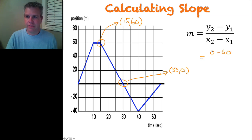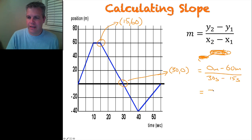So now we have our y is 0 minus 60. Oh sorry, I should rewrite that again. I need to put in my units. So 0 meters minus 60 meters over 30 seconds minus 15 seconds. Okay, and that gives me a total of negative 60 meters over 15 seconds. So that gives me negative 4.0 meters per second.